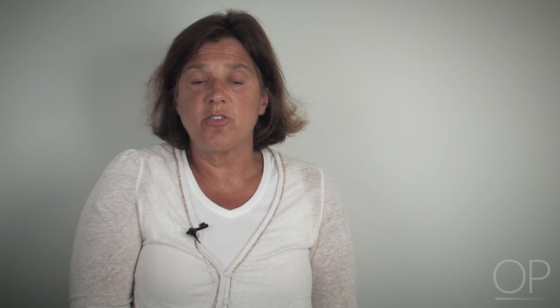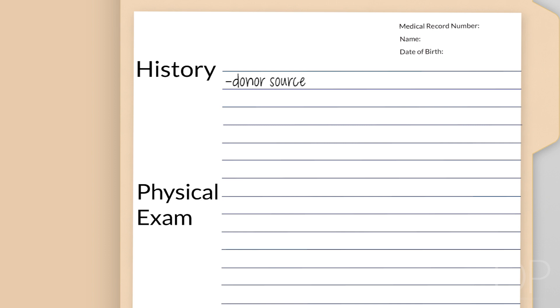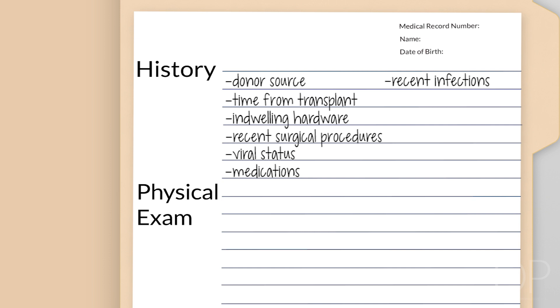When approaching a fever in a stem cell transplant patient in the ICU, start with a very good history. You need to know who the donor is — matched sibling versus mismatched unrelated donor. How far out are they from transplant? What central venous lines and other hardware are still in them? Have they had recent surgical interventions? What is the viral status of both patient and donor? What immunosuppressive and other medications are they on? What infections have they had recently, what are the sensitivities of documented infections, and what prior therapies have they received?